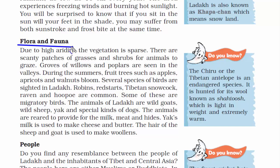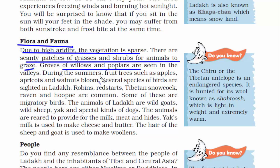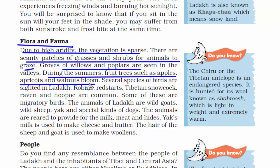Due to high aridity — meaning lack of moisture — the vegetation is sparse. There are scanty patches of grasses and shrubs for animals to graze. Groves of willows and poplars are seen in the valleys. You may have heard that cricket bats were traditionally made from willow wood, including the famous Kashmir willow. During the summers, fruit trees such as apples, apricots and walnuts bloom, as there is some warmth and moisture to support growth during that season.